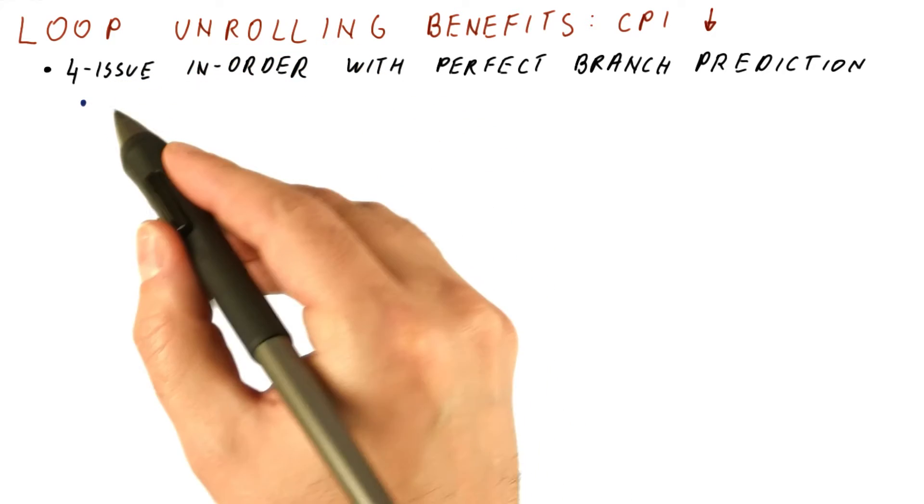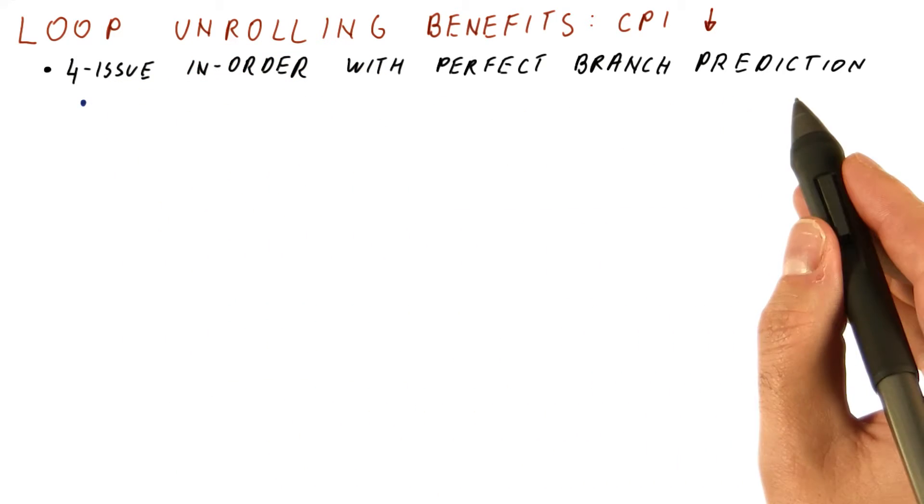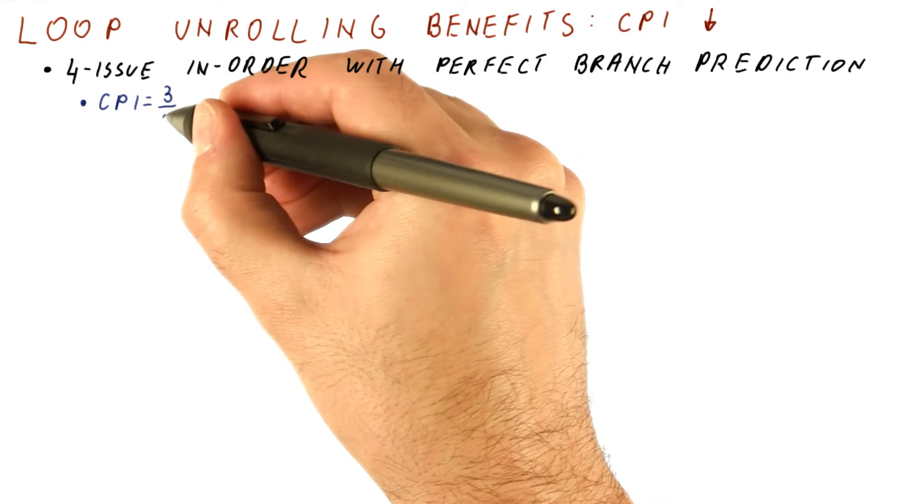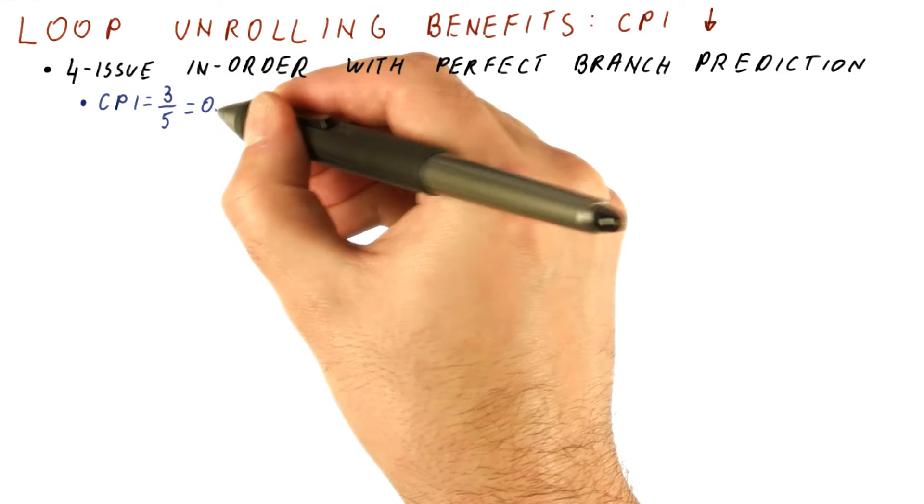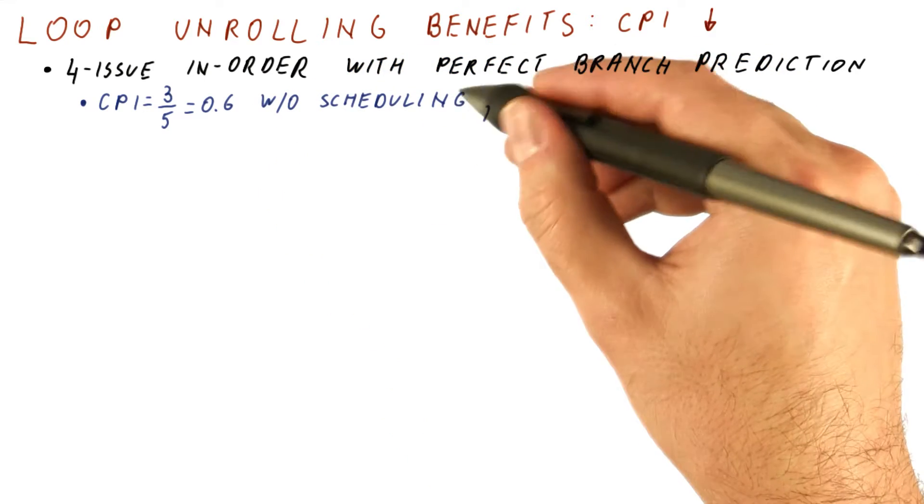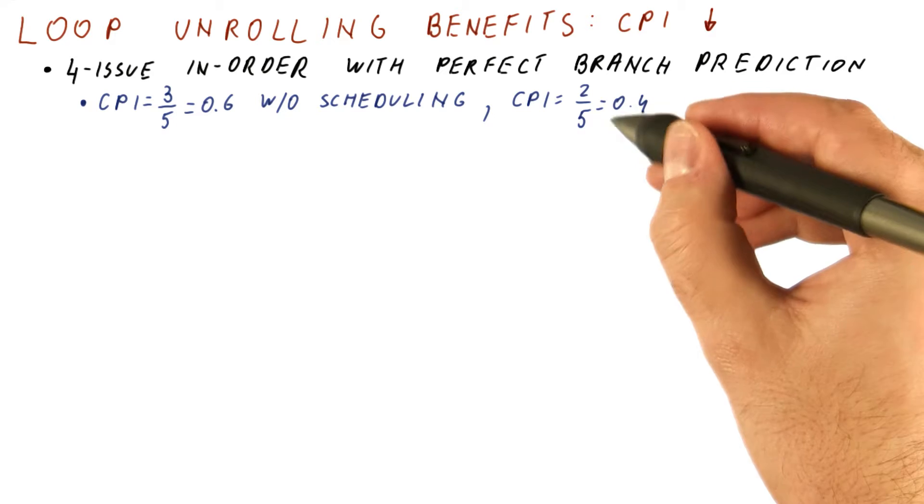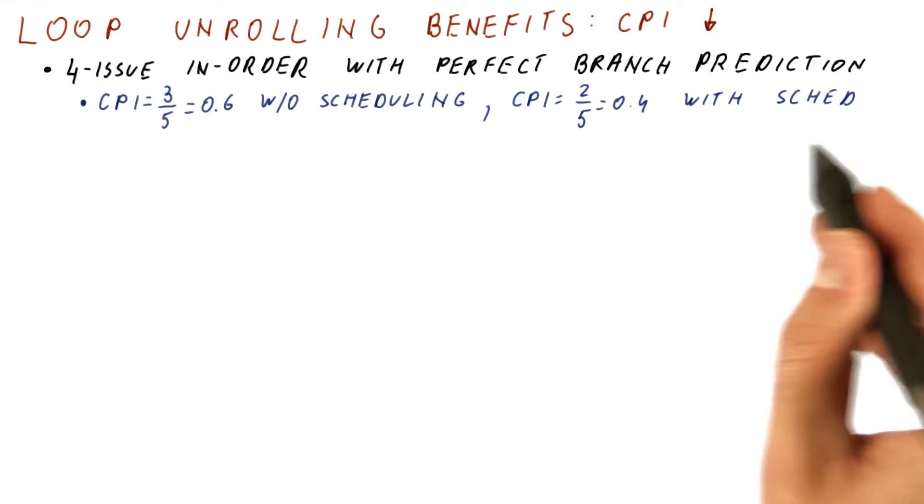So going back here, with our four-issue in-order processor with perfect branch prediction, we have seen that our loop gets a CPI of 3 over 5, which is 0.6 without scheduling, and it gets a CPI of 2 over 5, which is 0.4, if we do scheduling on the original loop.